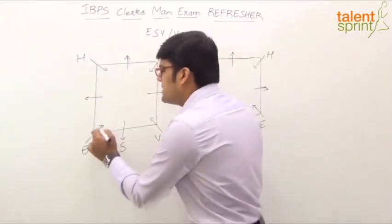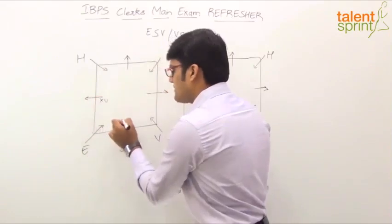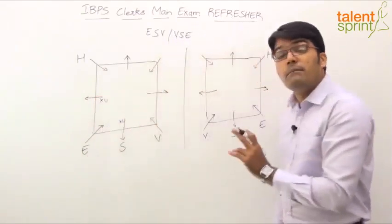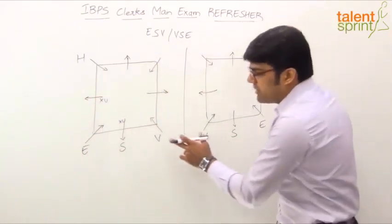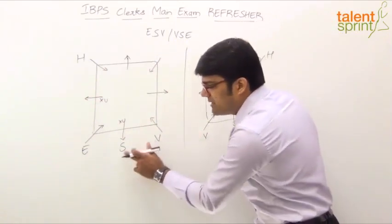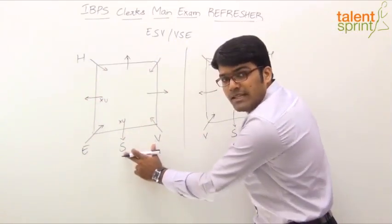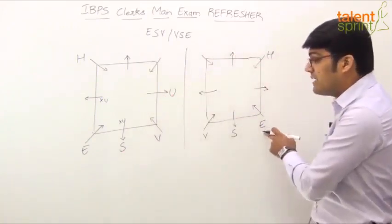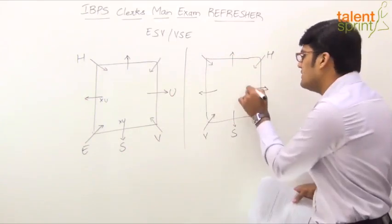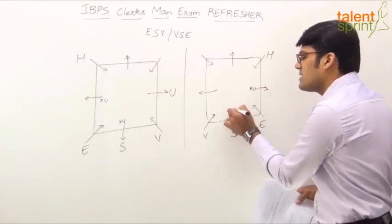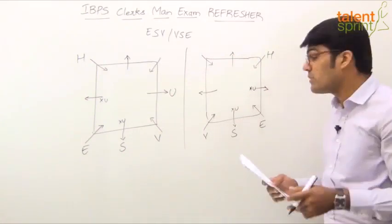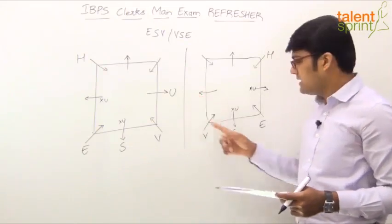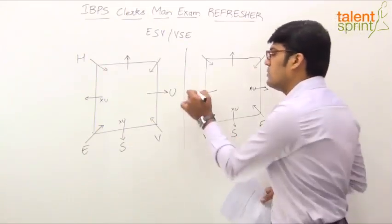So, U is not a neighbor of E means what? U cannot come in these two positions, one of which is only vacant. But U is a neighbor of V. Now, if U has to be a neighbor of V, it cannot be this position because this neighbor is only S. U has to come here. Fixed. Similarly here, if U has to be a neighbor of V, U is not an immediate neighbor of E. U cannot come in this position. You cannot come in this position. But U is a neighbor of V means what? U has to come here. So, U comes here.